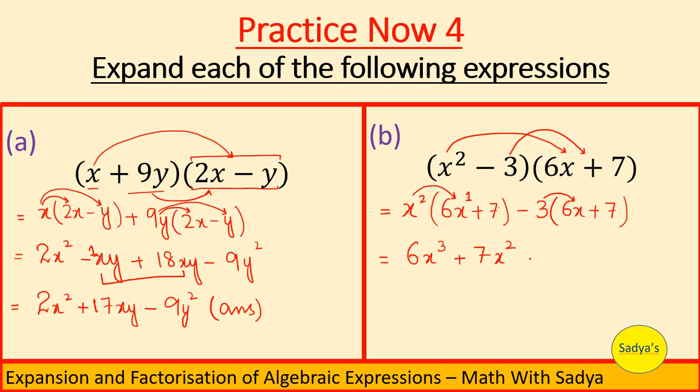Now negative 3 is to be multiplied with 6x. It will be equal to negative 18x. And negative 3 multiplied with positive 7 is negative 21. Now if we look at the variables, here the variable is x cubed, here the variable is x squared, here we have x, and here we don't have any variable at all. So all these four terms are not like terms. They are unlike terms. It means this is the expanded form of the question.